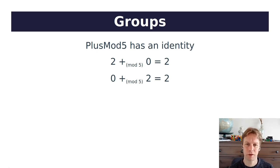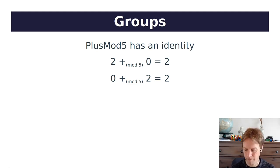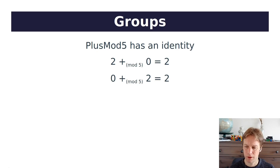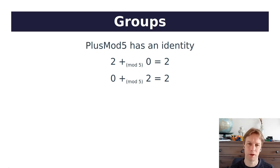Does plus mod 5 have an identity? Yes — zero is the identity. When you add 2 and 0, you get 2; when you add 0 and 2, you get 2. The fact that the addition is modulo 5 doesn't matter here — it still works. So zero is an identity for all the elements in plus mod 5. You could imagine some sets of numbers where there is no identity; if you did plus mod 5 but didn't have zero in the set, there wouldn't be an identity.